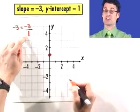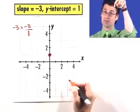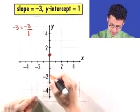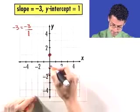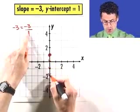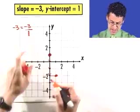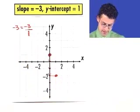Negative, that means I'm actually really not going to really rise. I'm actually going to fall three units, one, two, three. And then I'm going to run over one. And that gives me my second point. So now I've got my second point.